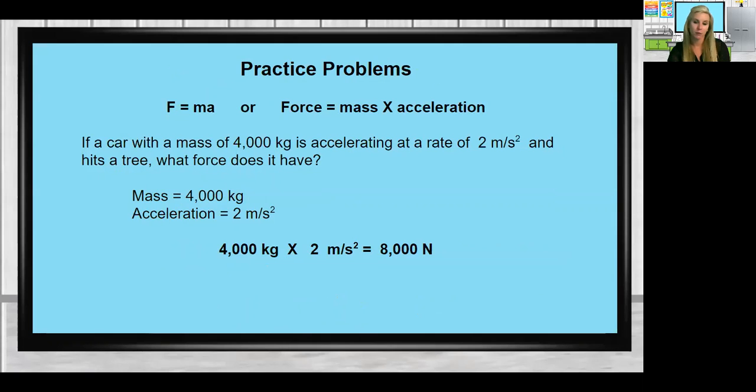If a car with a mass of 4,000 kilograms is accelerating at a rate of 2 meters per second squared and it hits a tree, what force does it have? So this is the force at which it had when it impacted the tree. The mass of 4,000 kilograms times the acceleration of 2 meters per second squared means the car had a total net force of 8,000 Newtons.